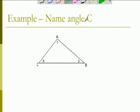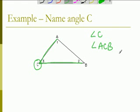Let's try another example. Let's name angle C. The first thing we can do is see if there's any other angles around angle C and there's not. So we can name this angle C. We also can name it ACB, and we can also name it BCA.